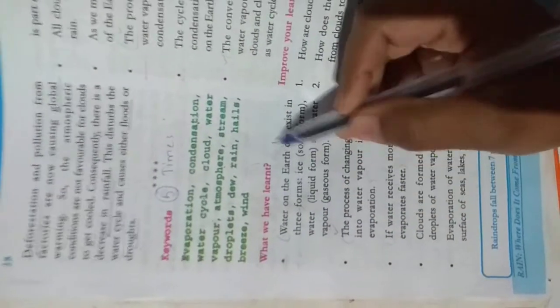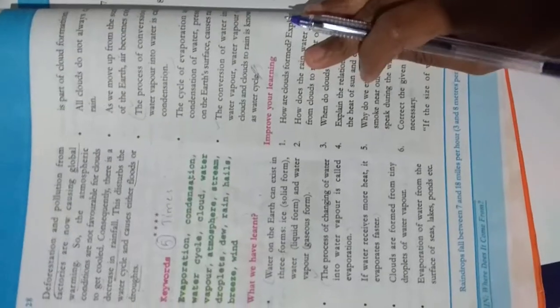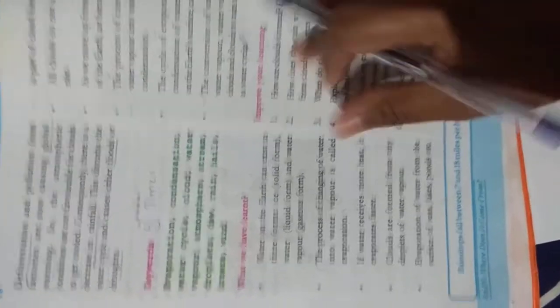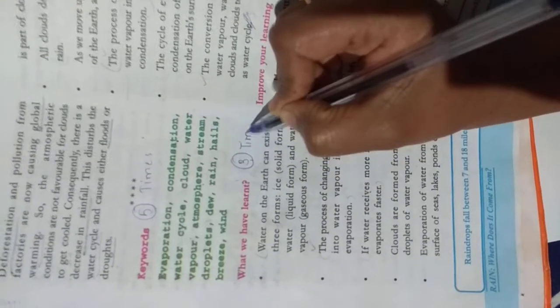And keywords ki neeche, what we have learnt—all these are important points. Till here, these points only you will get as the objective type in the examination. So what we have learnt also, you write three times in the assignment. And keywords five times.